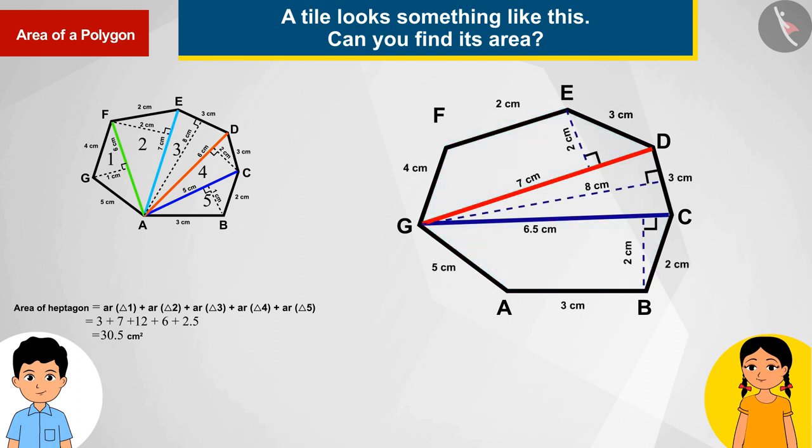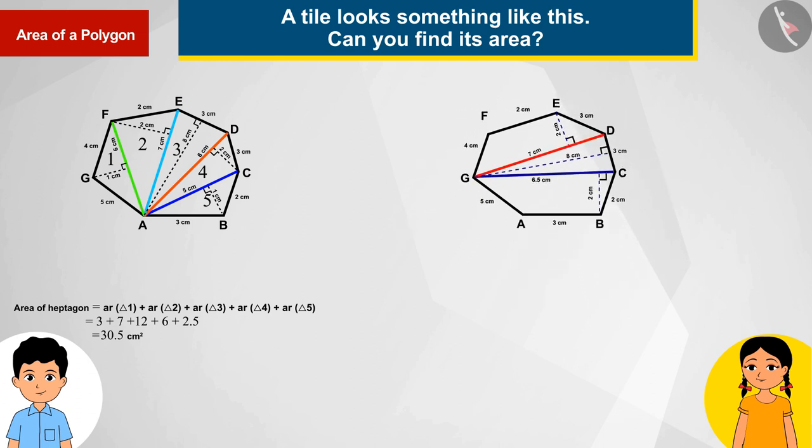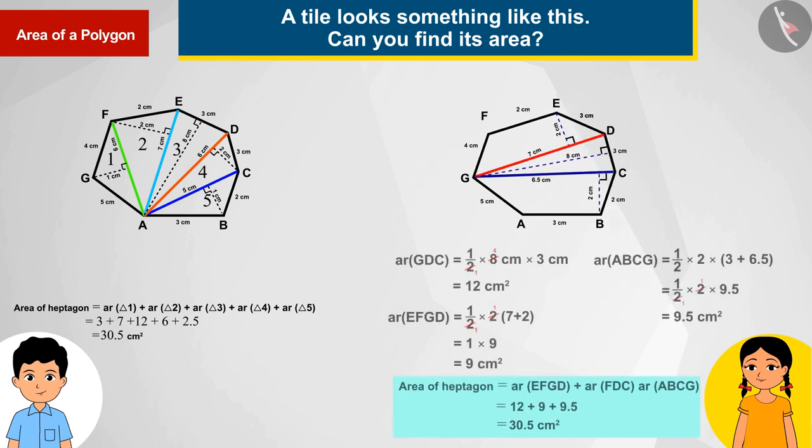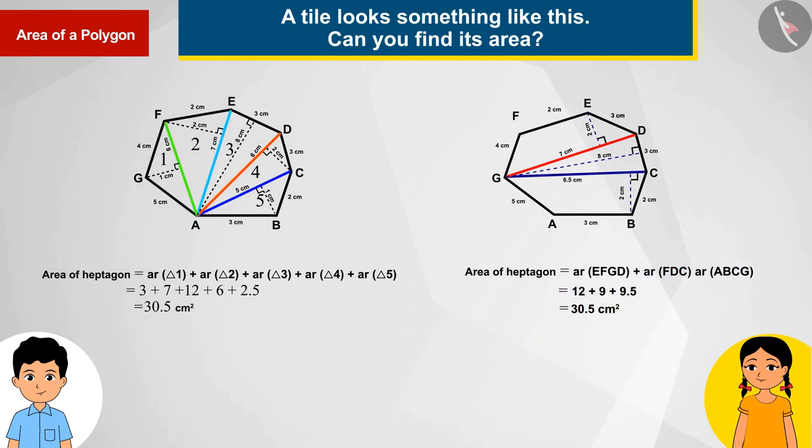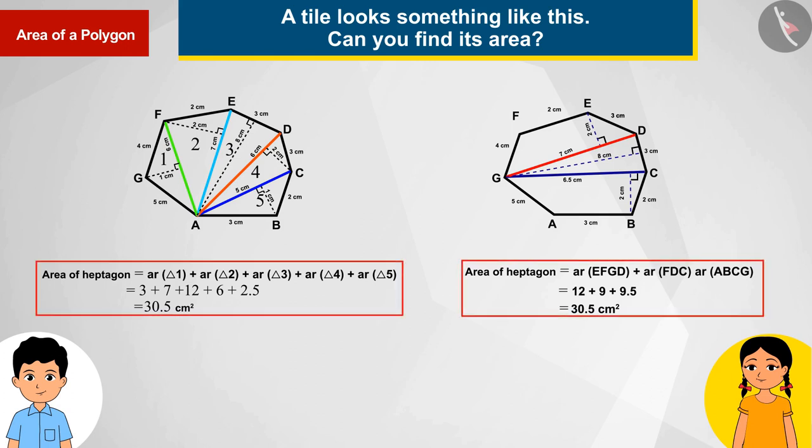Suppose its measurements are as follows, with the help of which by adding the sum of areas we get the area of the heptagon as 30.5. You can see here that the area of the heptagon is the same in both cases.